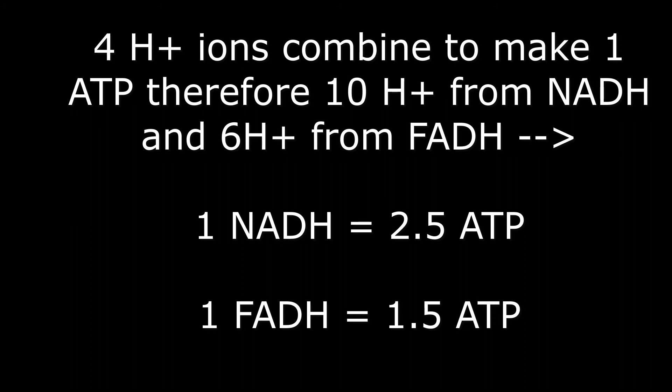The total number of hydrogen ions that we get from one FAD is only six: four from complex 3 and two from complex 4. In the fifth complex, ATP synthase makes ATP. Four hydrogen ions combine to make one ATP. Therefore, the 10 from NADH will give us 2.5 ATPs, and the six hydrogen ions from FADH will give us 1.5 ATPs.